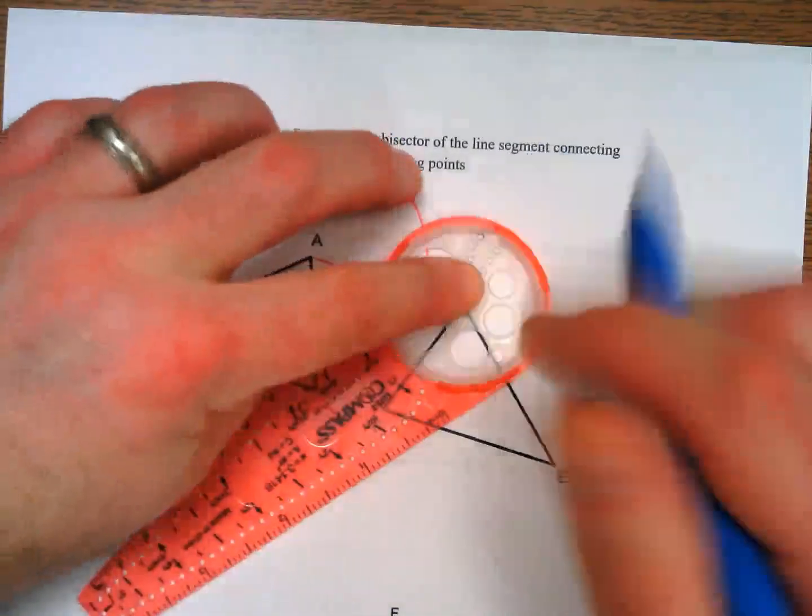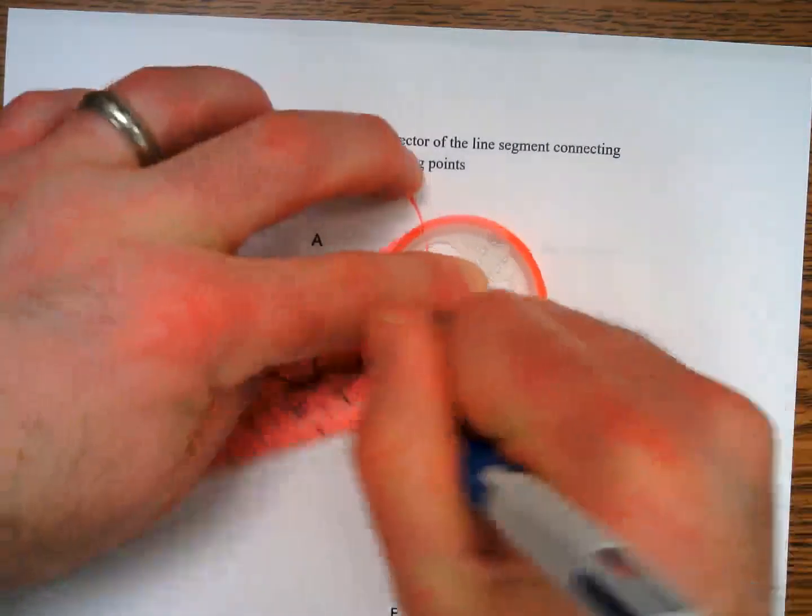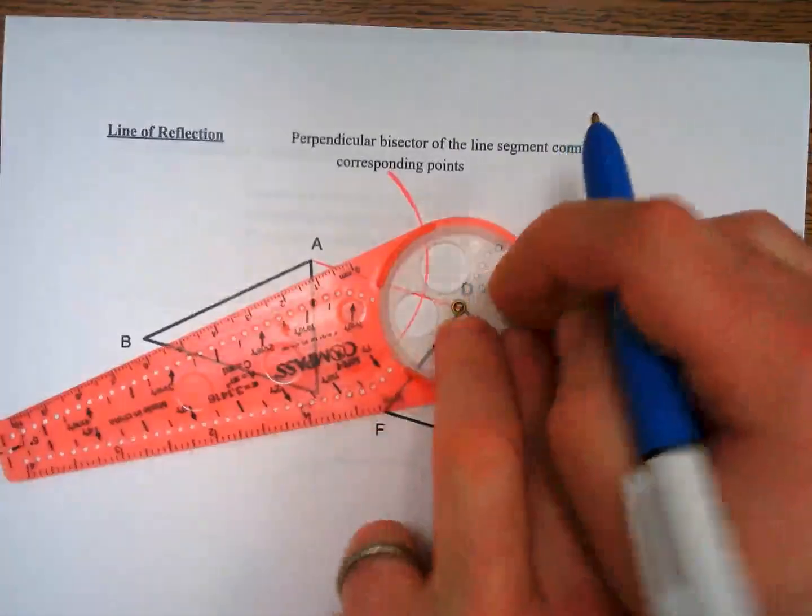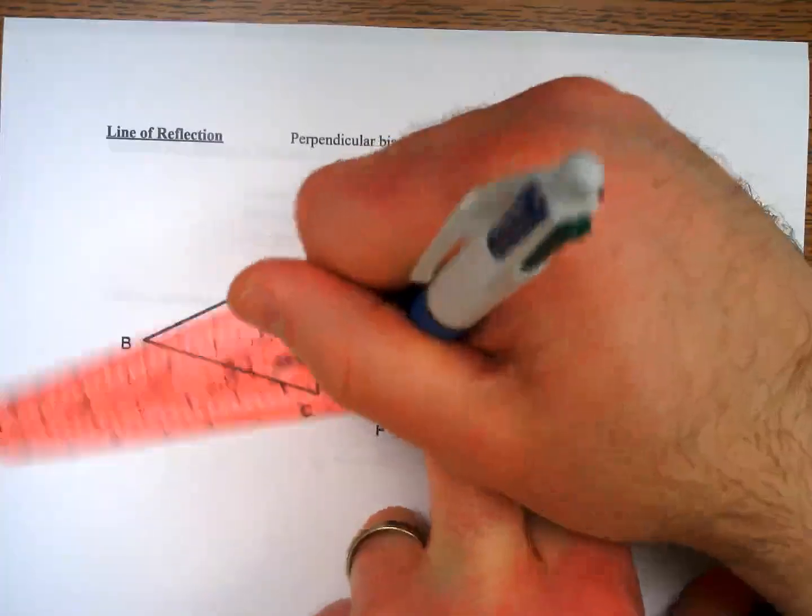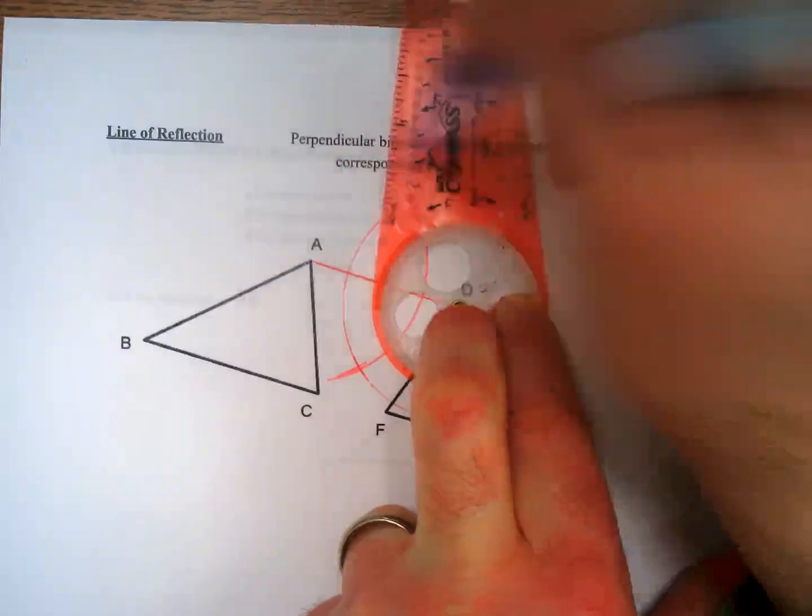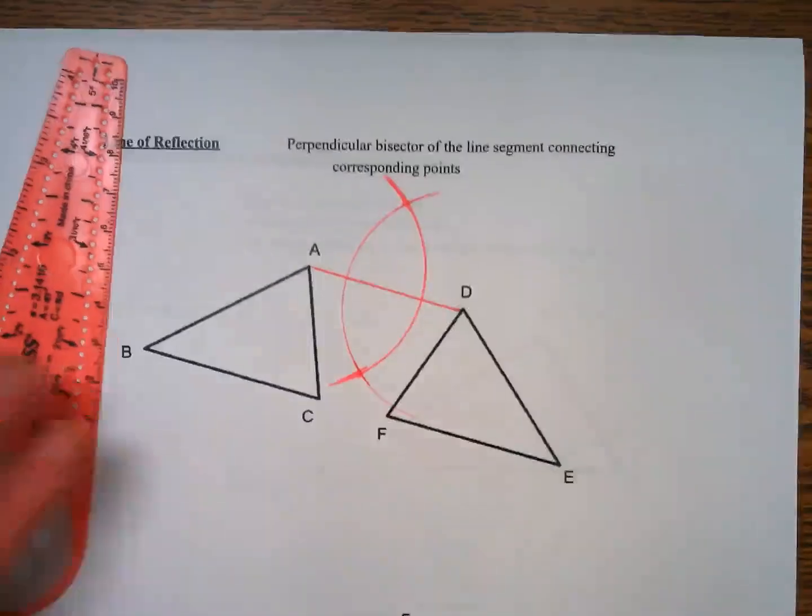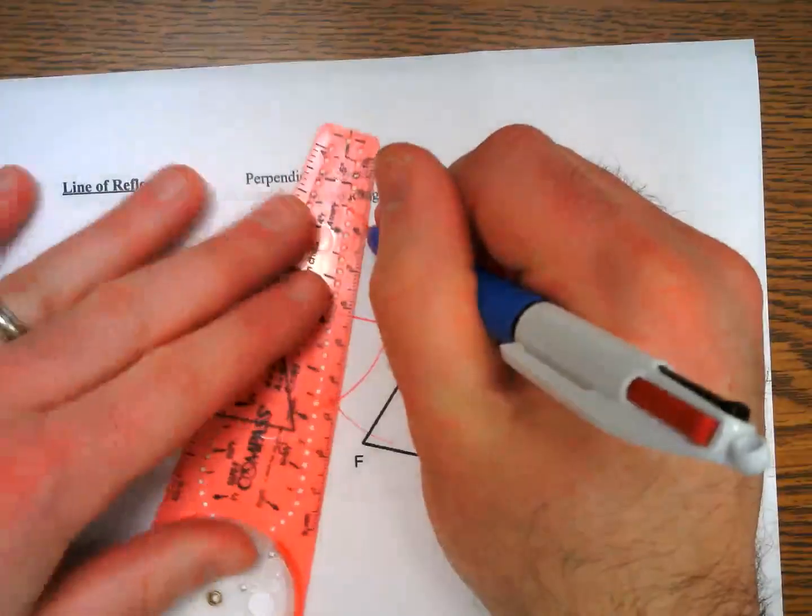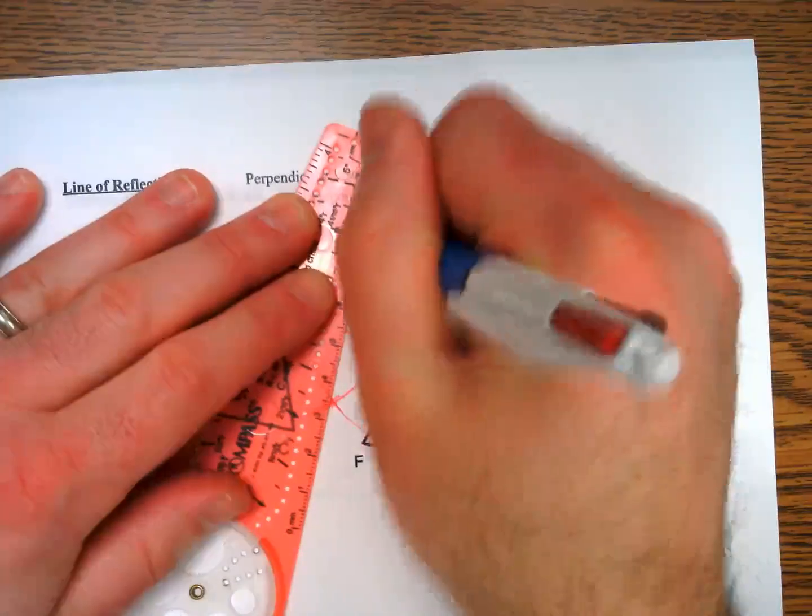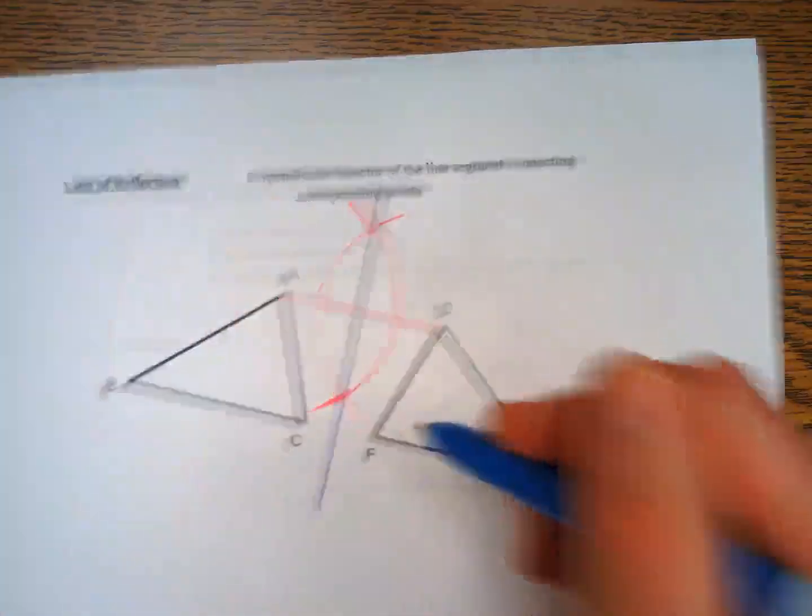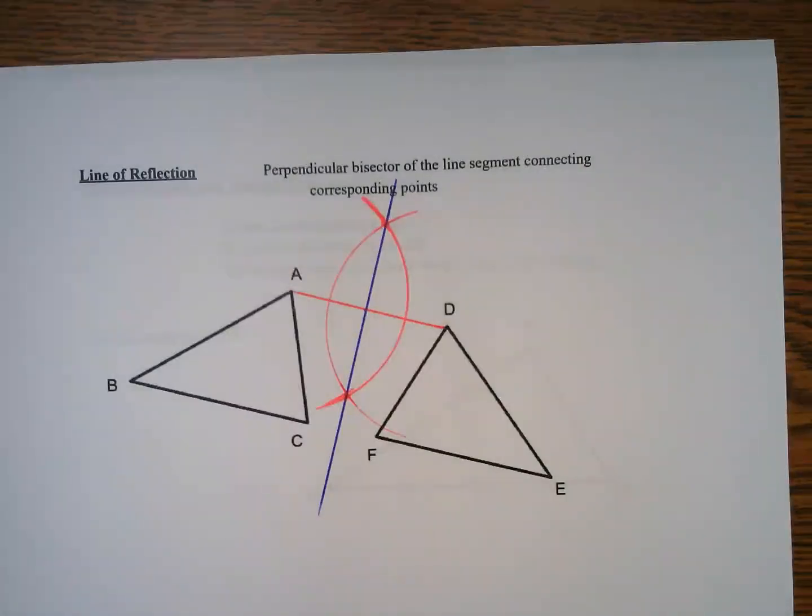So we have intersection points, and if we connect them we have the perpendicular bisector of that line segment. But we also have the line of reflection between ABC and DEF.